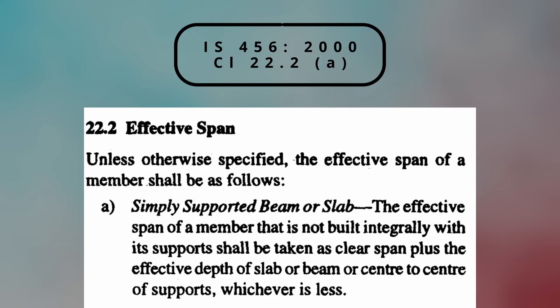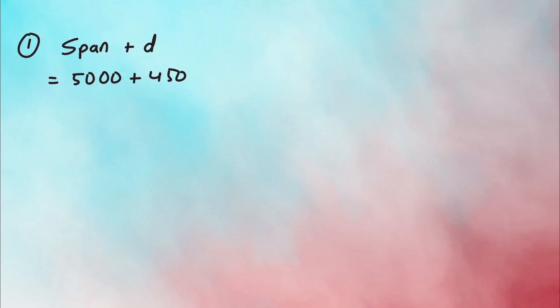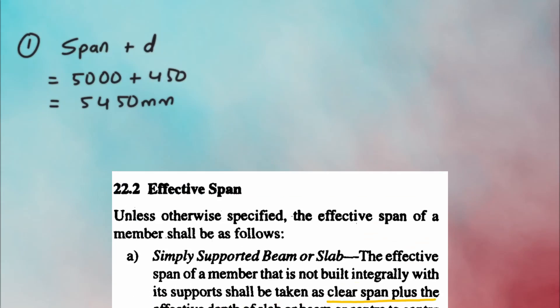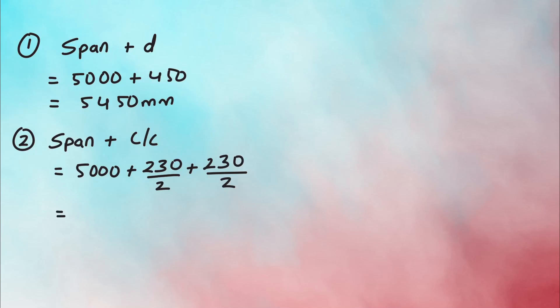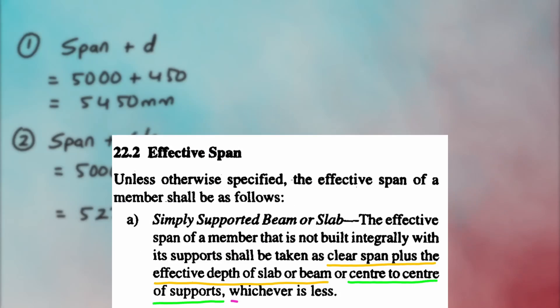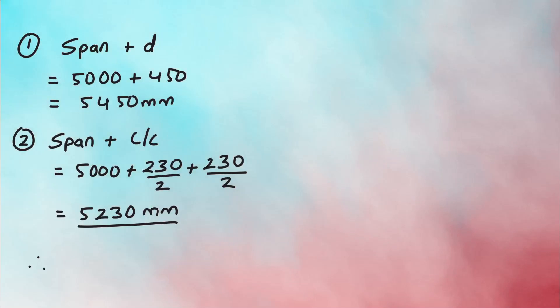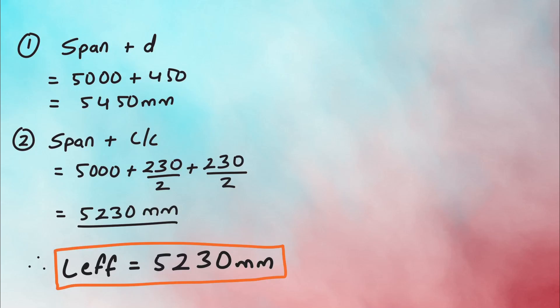Effective length is calculated as per clause 22.2a, which states the effective span of a member not built integrally with its support shall be taken as clear span plus effective depth. In our case, this gives either 5000 + 450 = 5450 mm, or center-to-center of supports = 5000 + 230/2 + 230/2 = 5230 mm. The lesser value is taken, so effective length equals 5230 mm.